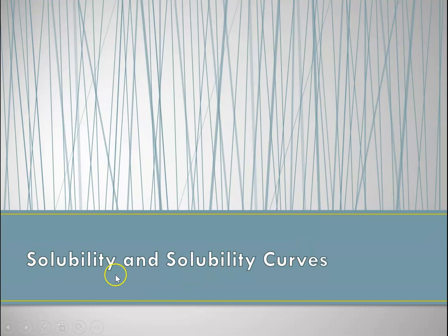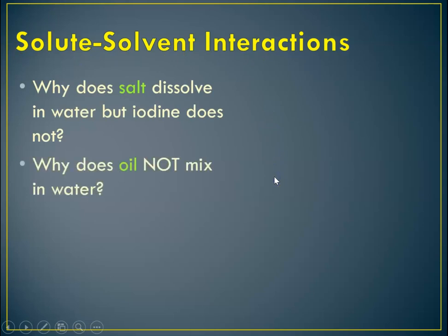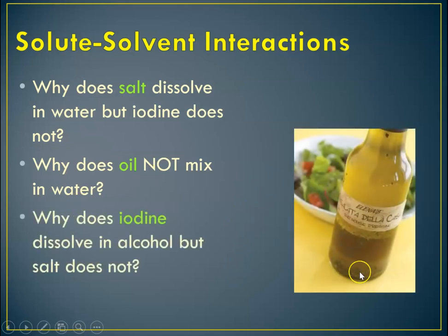So now I want to talk a little bit about the solubility and definition of solubility and solubility curves that we look at to figure out how soluble something is. We have to think about solute, the thing that's being dissolved, and solvent interactions. Why does salt dissolve in water, but iodine doesn't? Why does oil not mix in water? Why does iodine dissolve in alcohol, but salt doesn't? All of these have to do with whether the solute and the solvent are attracted to one another.